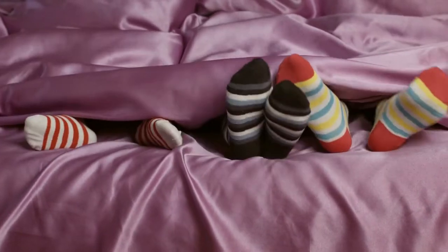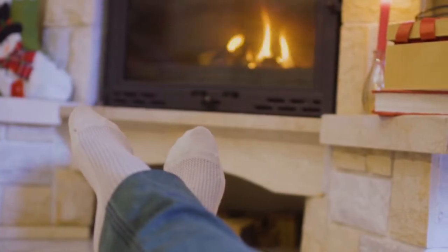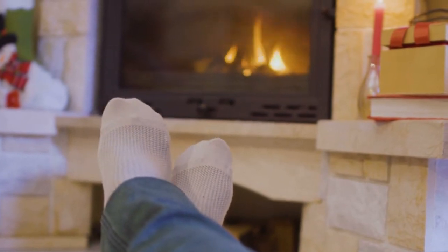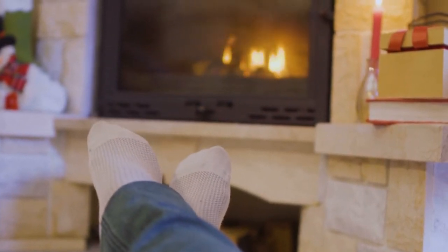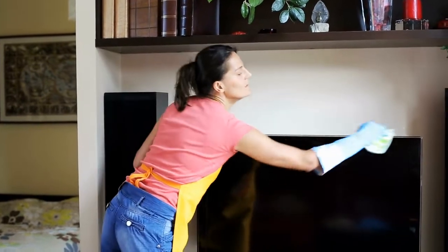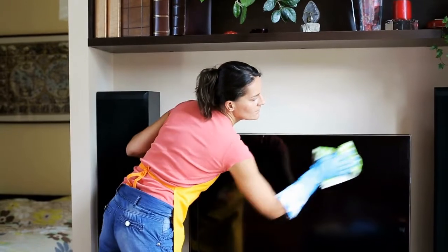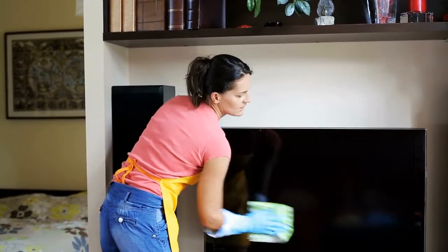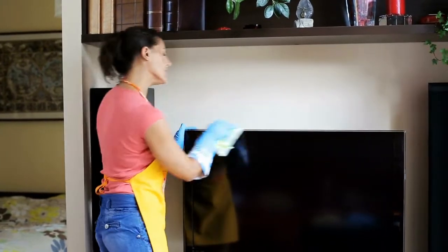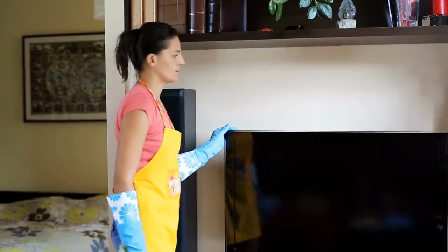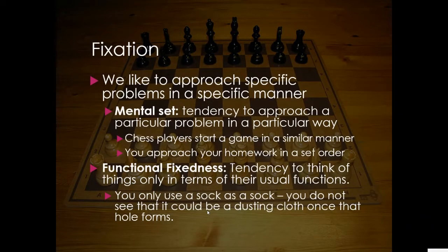Functional fixedness is the tendency to think of things only in terms of their usual functions. You only see a sock as a sock — never as a dusting cloth. Once it has a hole in it, you might look at that holey sock and say 'you're a garbage sock now,' instead of putting it on your hand and going around the house dusting. Sometimes we just get stuck within our boxes.